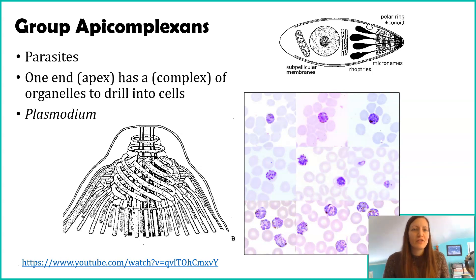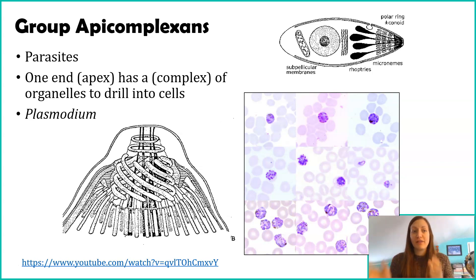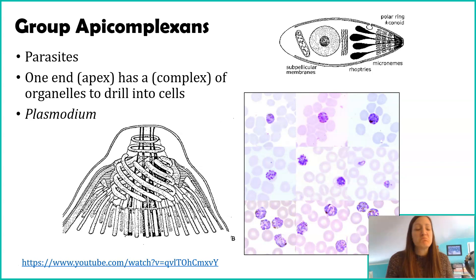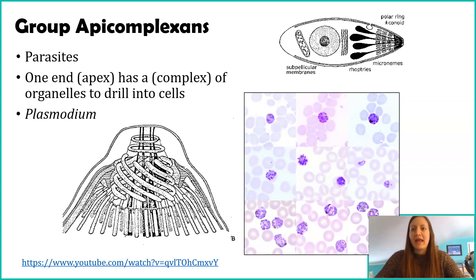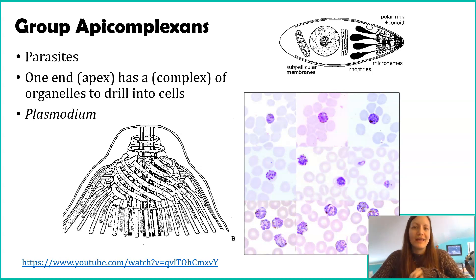Let's get started with group apicomplexans. Apicomplexans are all parasites. What they have is something called an apical complex — a series of organelles that are designed to drill into cells.